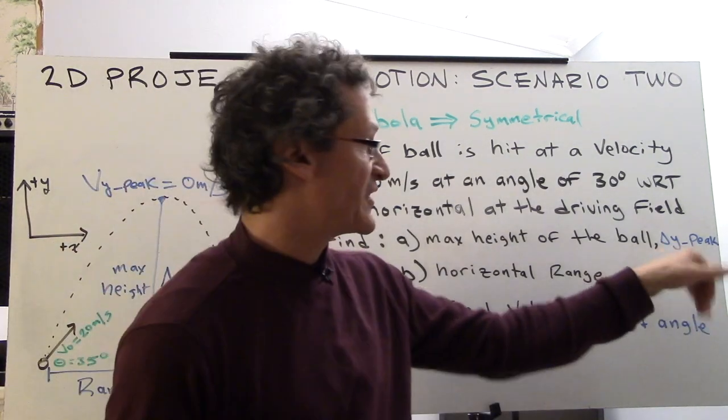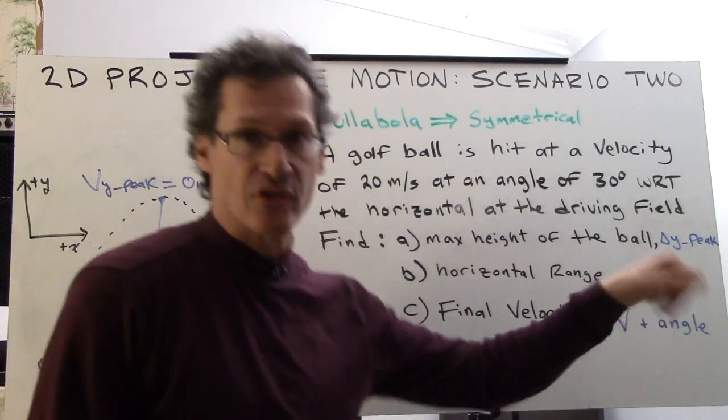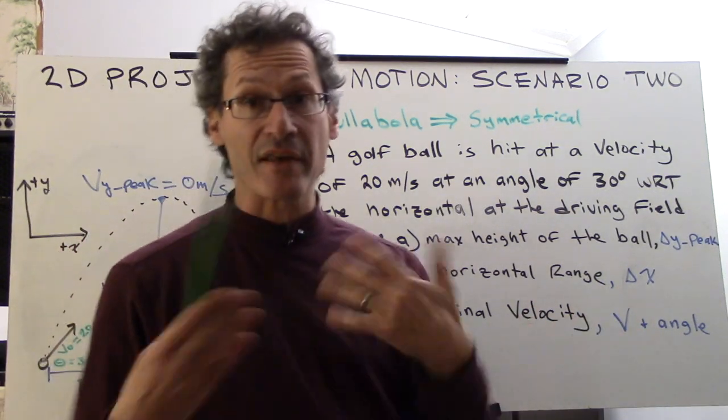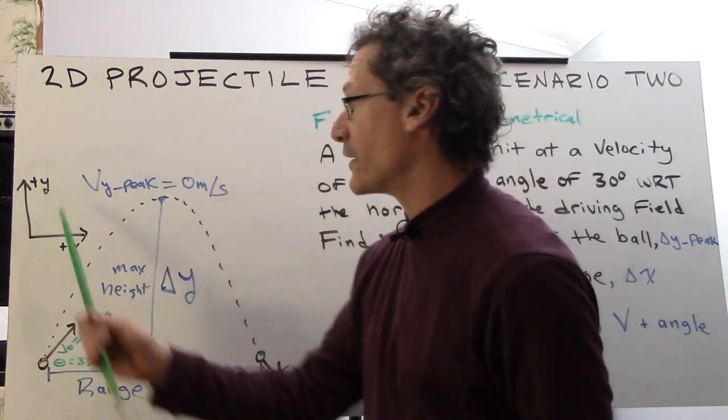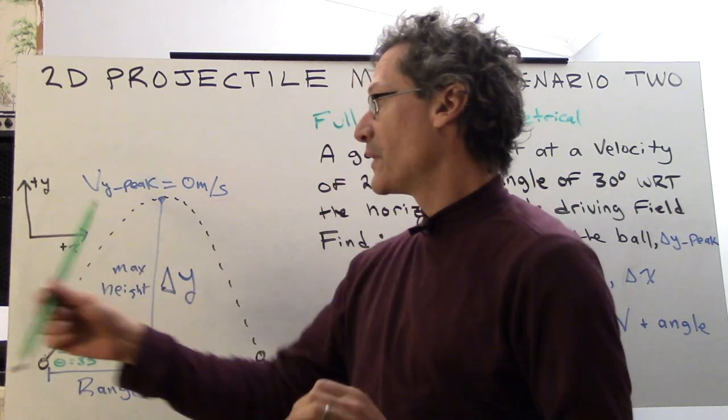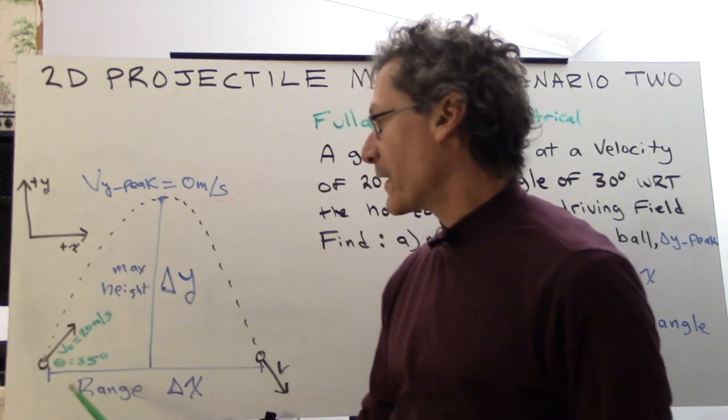What's the maximum height of the ball? That's delta-y peak. The horizontal range, delta-x, and the final velocity, which is velocity v and the angle. Here's the drawing and coordinate system. Positive direction for y is up and to the right is positive x.